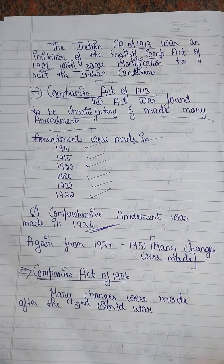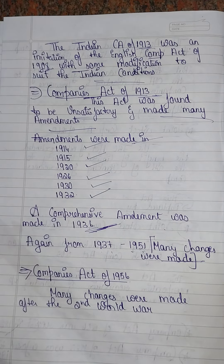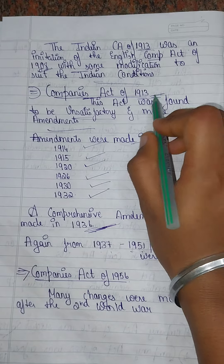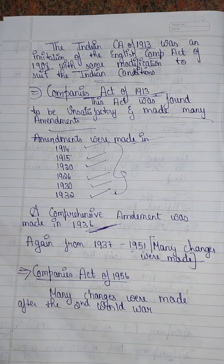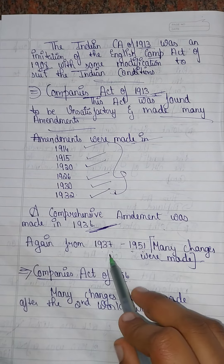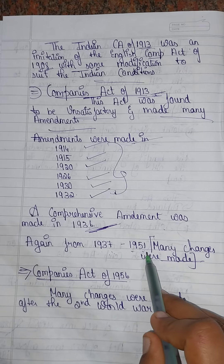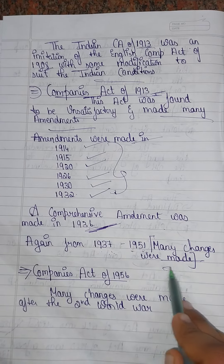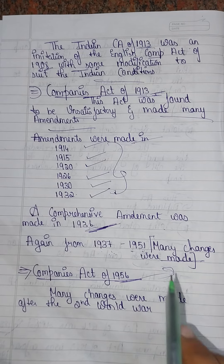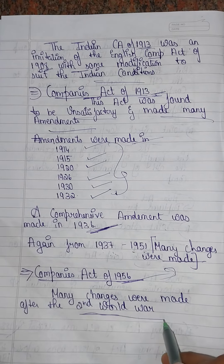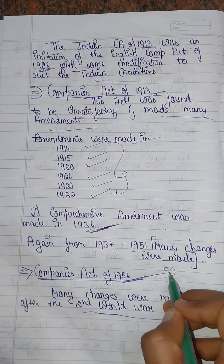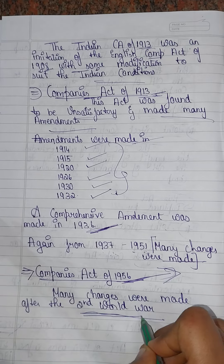More changes were made from 1937 to 1951. The last significant Companies Act is the Companies Act 1956. Many changes were made after the Second World War, leading to the 1956 Act.